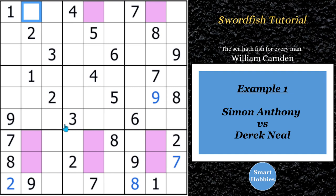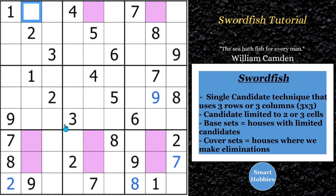So what is a swordfish? The Sudoku swordfish strategy is a single candidate technique. It uses three rows and three columns. So you only have to focus on one digit, in this case, the threes. The grid must contain three rows, three columns, or digits to candidate to only two or three cells.